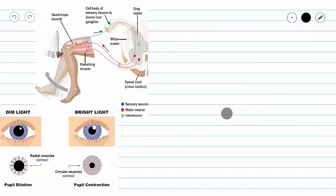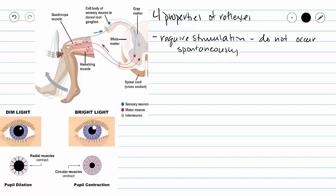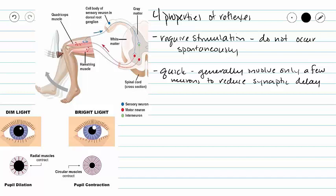We have four properties of reflexes, and we're going to see many of these properties reflected in our definition of a reflex. Our first property is that we require stimulation. Our reflexes are not spontaneous actions — they occur in response to a stimulus. In our two pictures, our reflex hammer hitting our patellar tendon is the stimulus, or in our bottom picture it's our dim light versus our bright light. Reflexes are very quick; they generally only involve a few neurons so that we can reduce our synaptic delay and remove our body from harm very quickly.